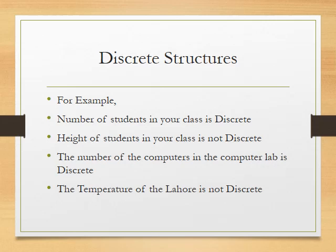You should search for more examples of which values are discrete and which are not. For instance, consider a watch or clock. A wall clock — specifically an analog clock with hands — is analog. Its values are not discrete; its hands move continuously, so that movement is continuous, not discrete.